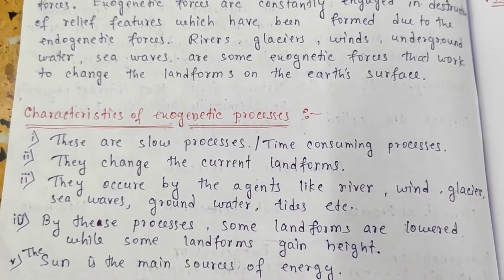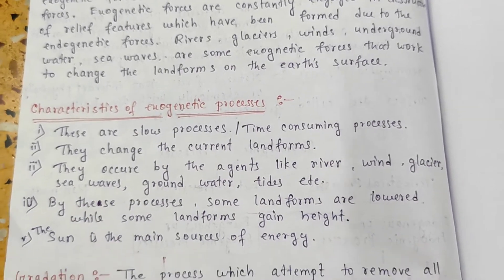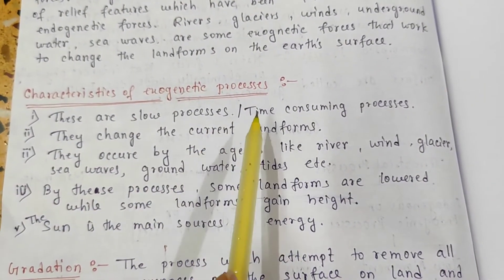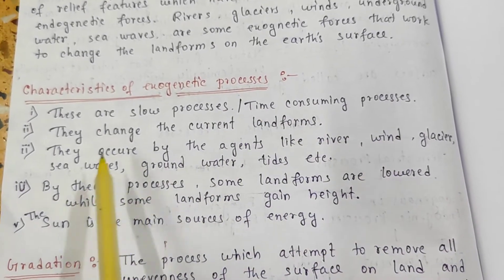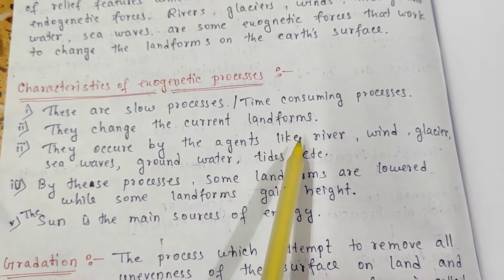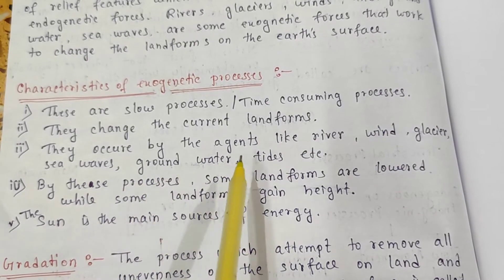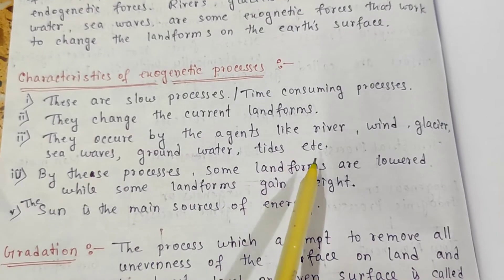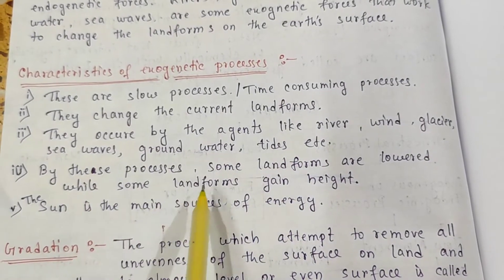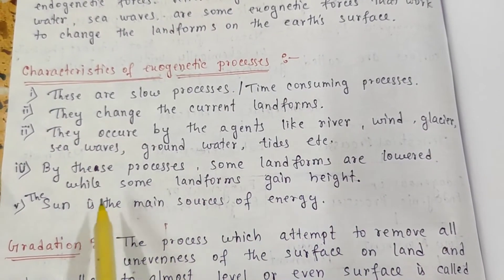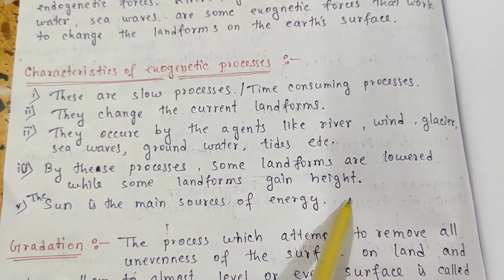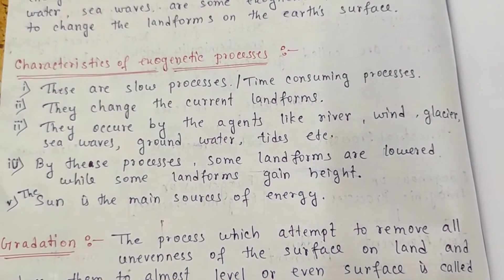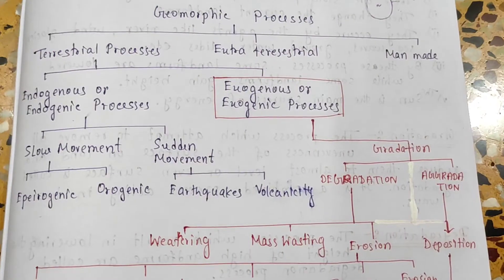Characteristics of exogenetic processes: these are slow, time-consuming processes. They change the current landforms. They occur by agents like river, wind, glaciers, sea waves, groundwater, tides, etc. By this process, some landforms are lowered while some landforms gain height. The sun is the main source of energy.